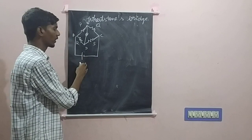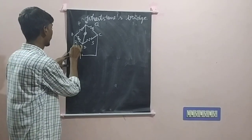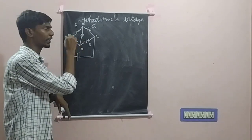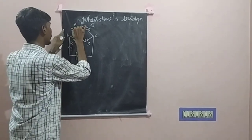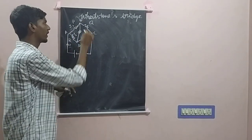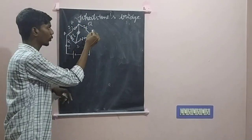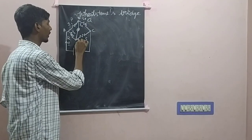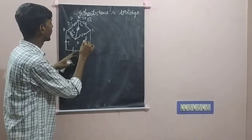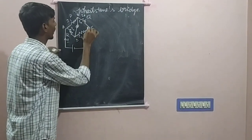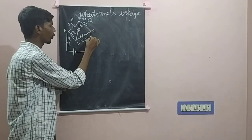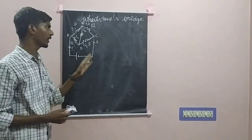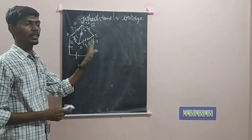When the external supply produces current, a current I flows to junction A. At junction A, it splits into I1 and I2. At junction B, it again splits into I3 and IG. At junction D, it becomes I4, and at junction C, the currents recombine to form I. This is because, as per the law of conservation of electric charge, the charge entering the loop must also leave it.